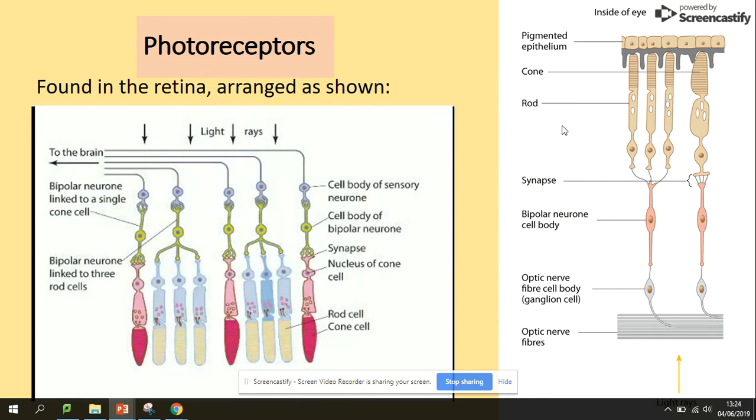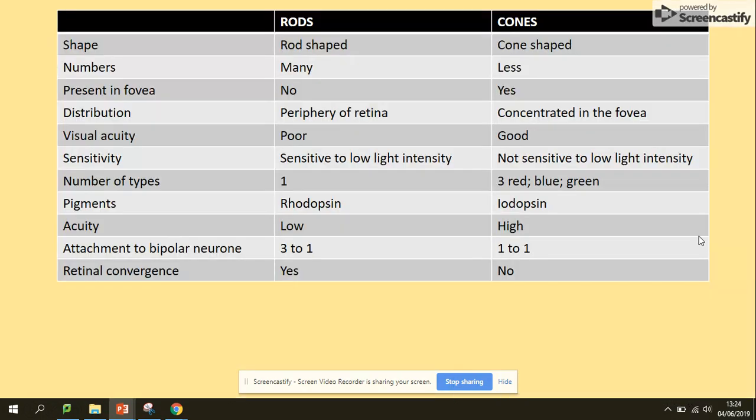There is a difference between the rod and cone cells. The main difference comes from the fact that three rod cells are attached to one bipolar neuron cell, while one cone cell is attached to one bipolar neuron cell.